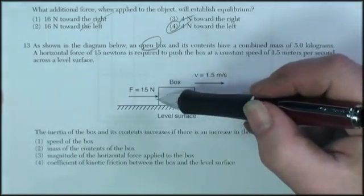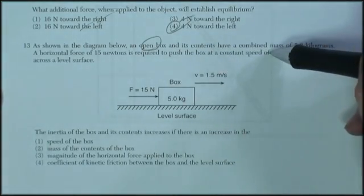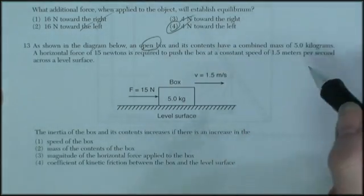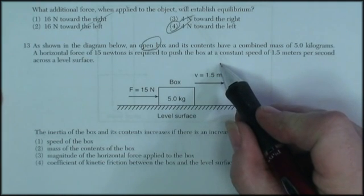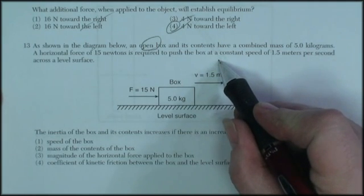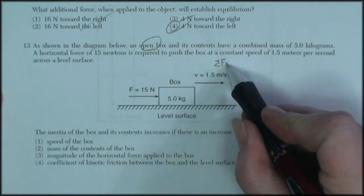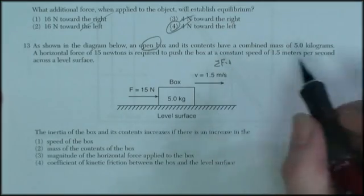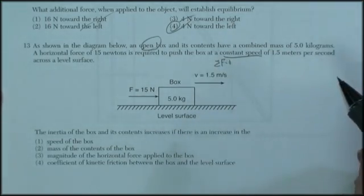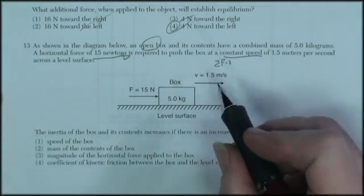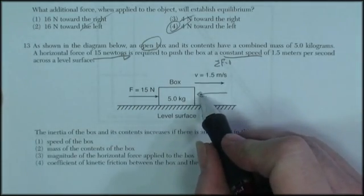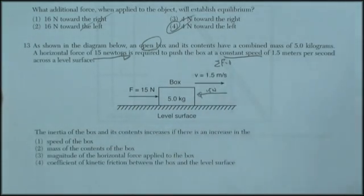A horizontal force of 15 Newtons is required to push the box at a constant speed of 1.5 meters per second. So there's a net force of zero. The net force is zero because there's zero acceleration. Constant speed means zero acceleration. So if I'm pushing with a force of 15 Newtons, that must mean the frictional force must also be 15 Newtons. So there's a lot of stuff they could ask. Let's go see what they're asking.